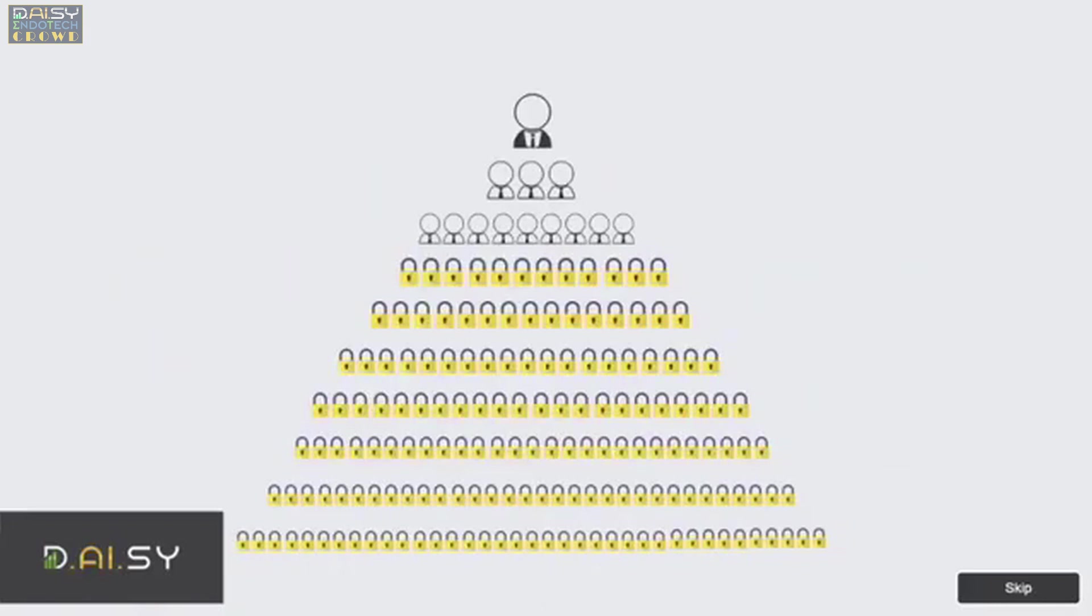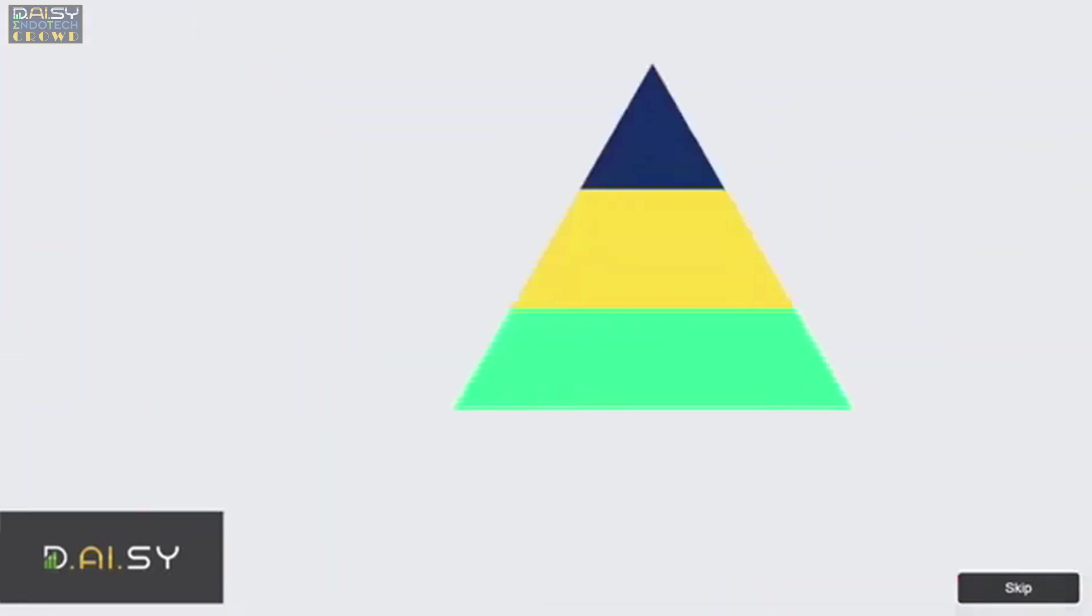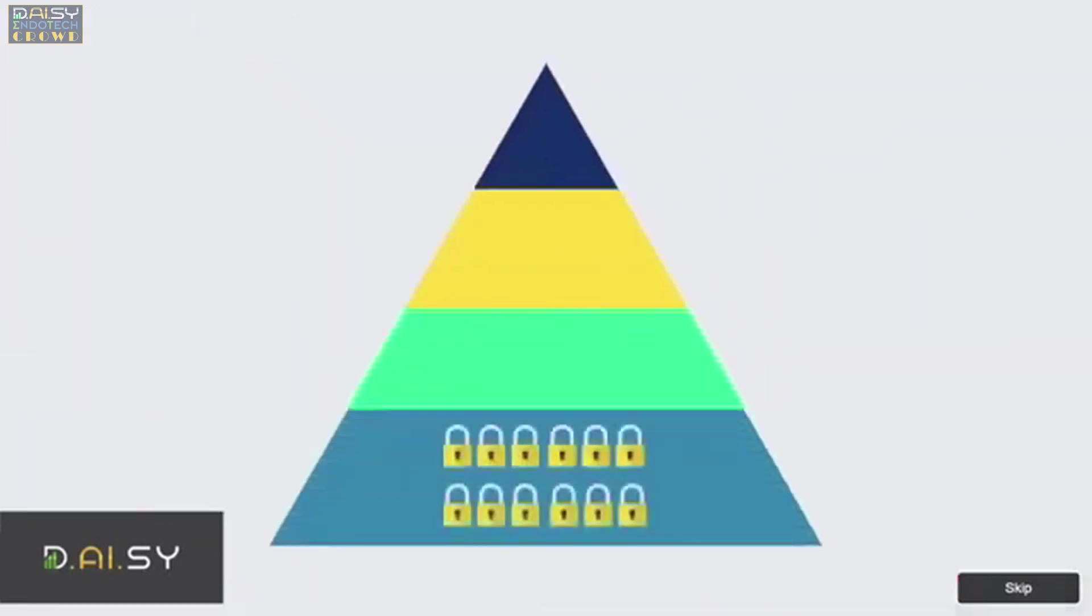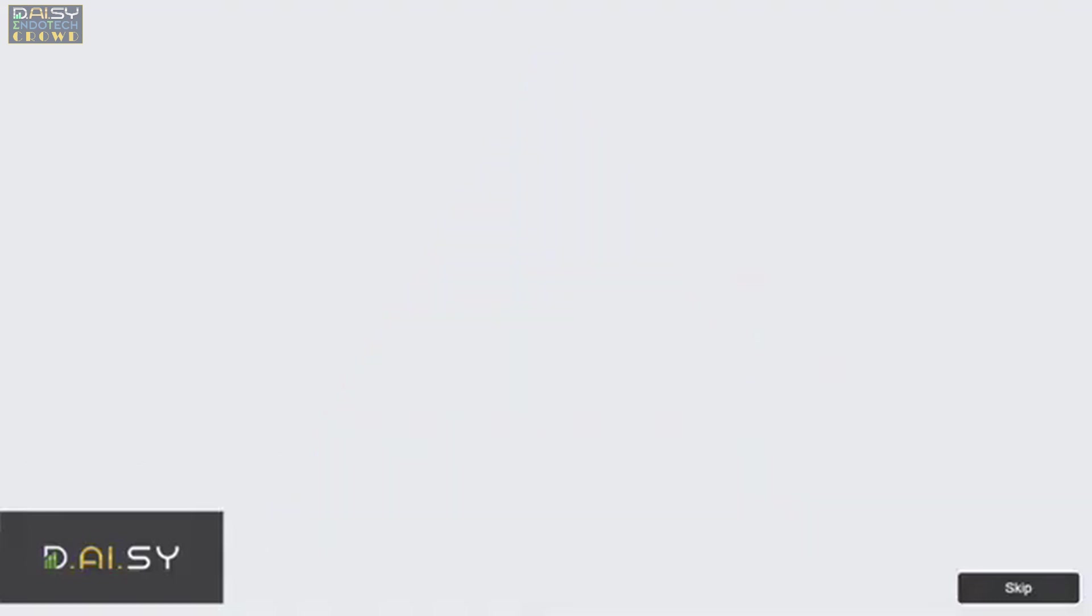For example, to qualify for generation 3 matrix payouts, you need 3 personal referrals with a total of $1,000 funded by them. To unlock generation 4, you need 6 personal referrals with the total funded $2,000.